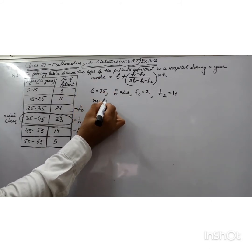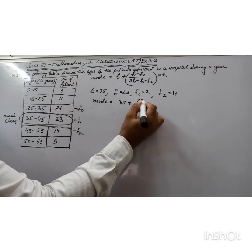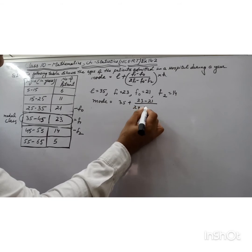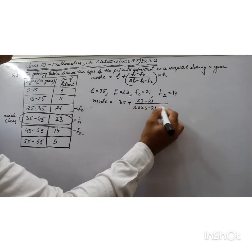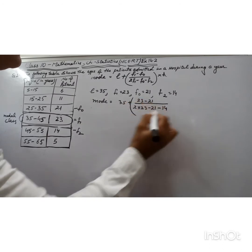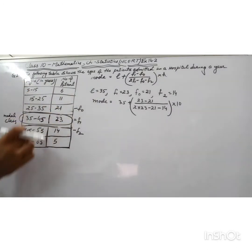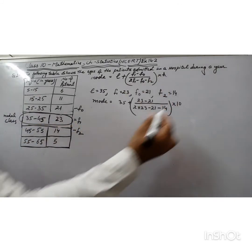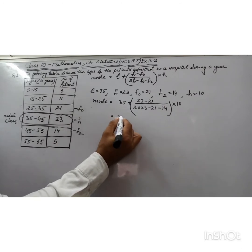We will fill these values. Mode = 35 + [(23 - 21) / (2 × 23 - 21 - 14)] × h. h is the class size, which is 10 for all class intervals. So it becomes 35 + [2 / (46 - 21 - 14)] × 10.